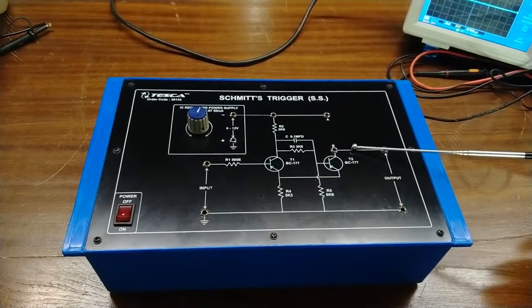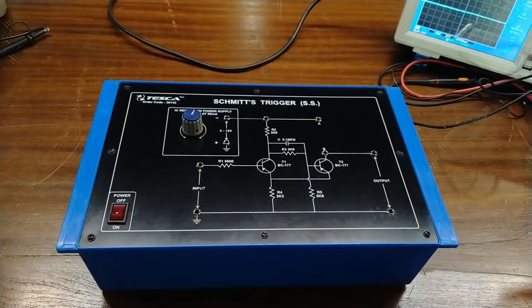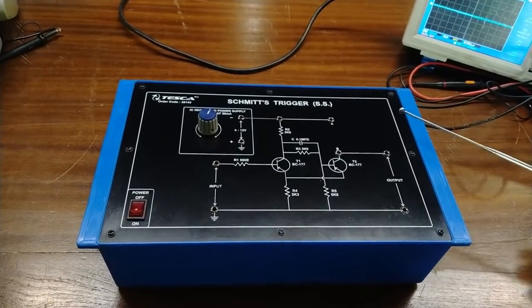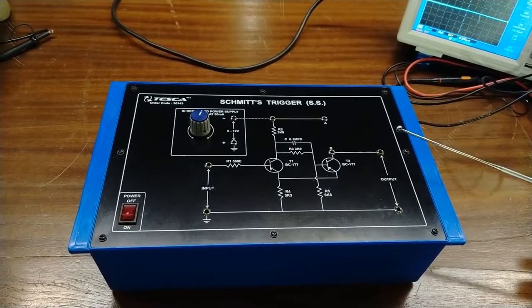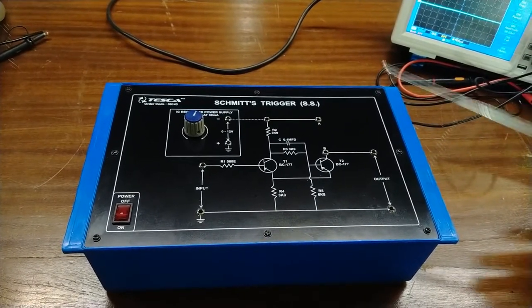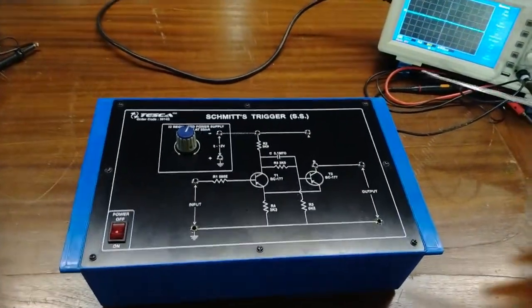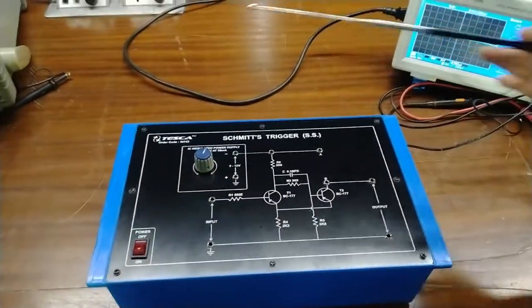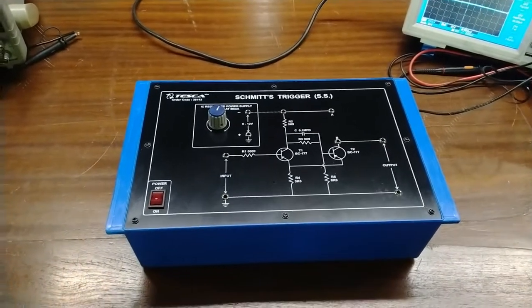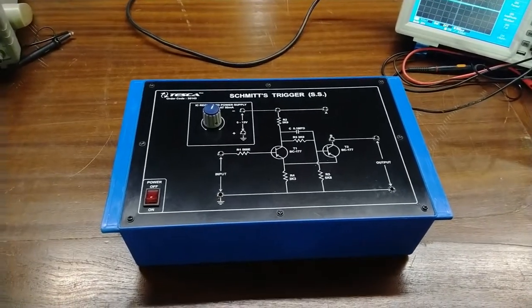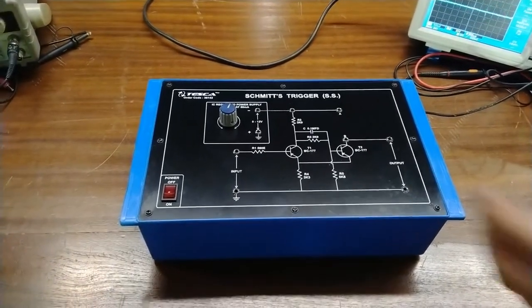For this Schmitt trigger circuit operation, we need a decade audio frequency generator — here we have a decade audio frequency generator. We also need a power supply from zero to twelve volts. We also need a CRO — here we have a CRO. And we also need a decade resistance box — here we have a decade resistance box.